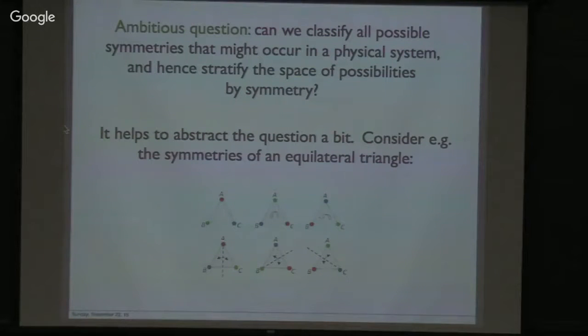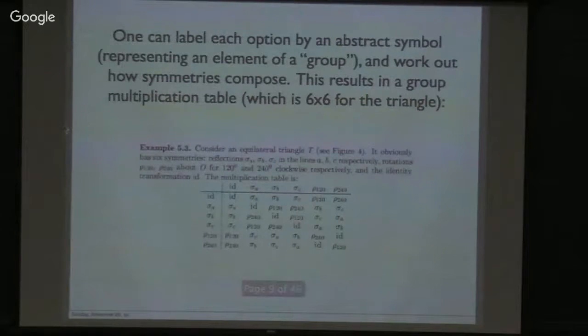So these are all operations we could do. And because they're symmetries, if we do one and then another, we'll still get back the same triangle. So you can compose them in a natural way. So if you now label each option, rotate by 120 degrees, rotate by 240 degrees, flip across the axis bisecting A and the BC line, if you label these by abstract symbols, which represent elements of a mathematical object called a group, you could just work out how the symmetry is composed once and for all. If you first rotate, then flip, here's what you did to the triangle. And the result is a sort of boring analog of the multiplication table. Okay, here it is. There are six symmetries of the triangle, including the identity, do nothing to the triangle. And this is what happens if you first rotate by 120 degrees and then do a flip on the line that goes through the Bieber text.